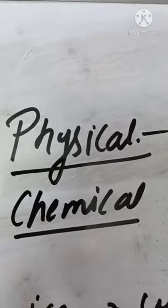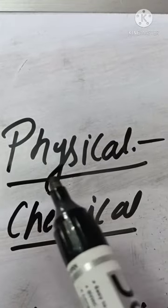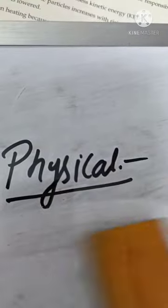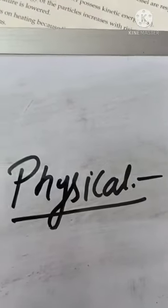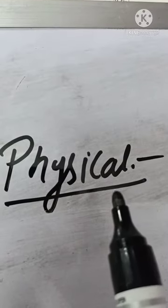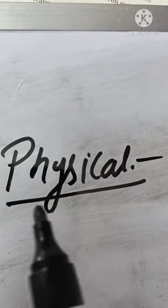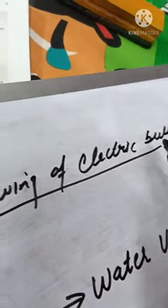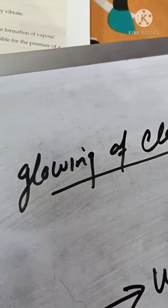The law of conservation of mass is applicable to both physical as well as chemical changes. First we will discuss physical changes. Physical changes are changes in which no new substances are formed and the change can be reversed by reversing the conditions. Examples include glowing of an electric bulb, melting of ice, and freezing of water.